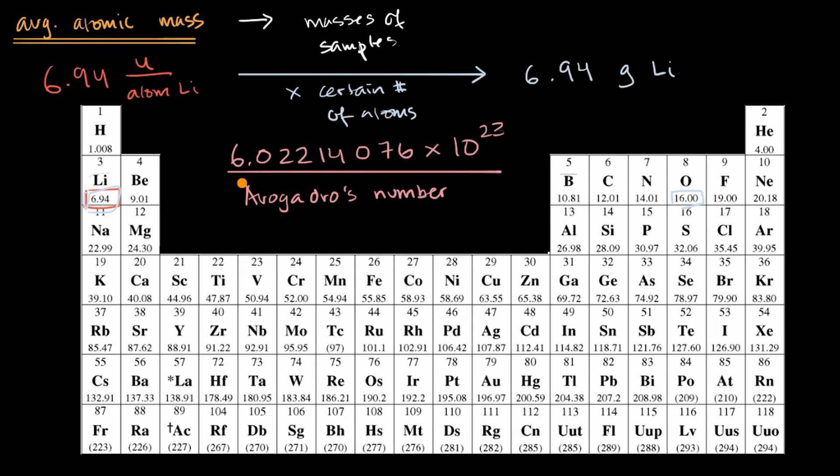And in most contexts, because you're not normally dealing with data with this many significant digits, we will usually approximate it as 6.022 times 10 to the 23rd power.